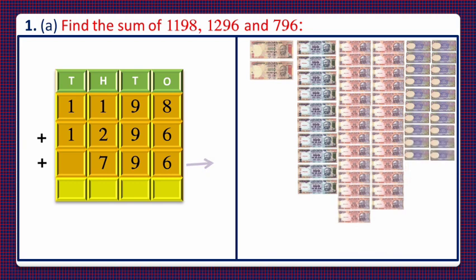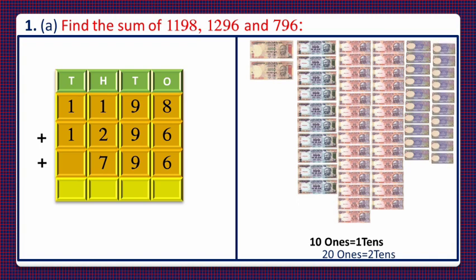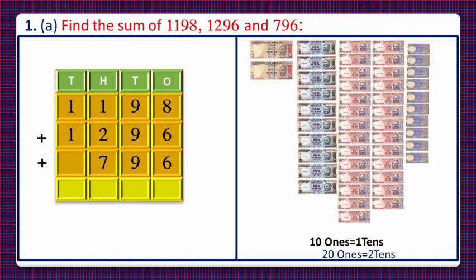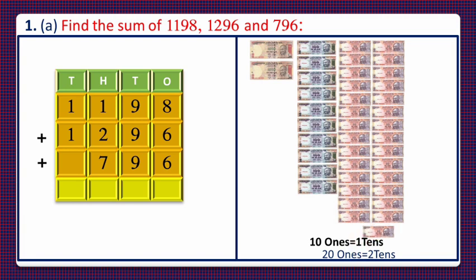Now on adding the ones: since 10 ones equals 1 ten, so 20 ones equals 2 tens. We'll take 2 tens instead of 20 ones. Zero ones are remaining, so we'll write 0 in the ones column and 2 on top of the tens column.